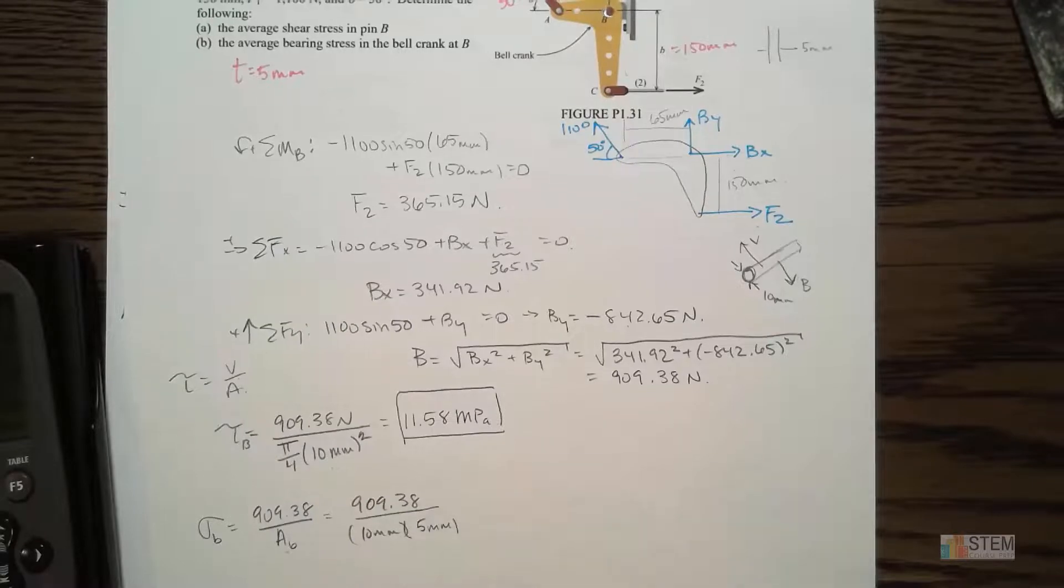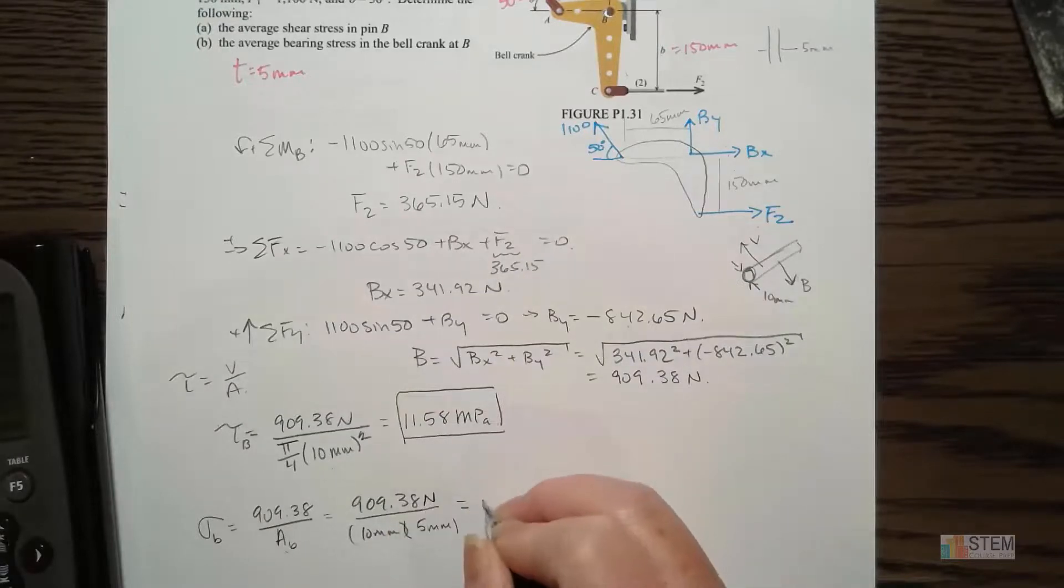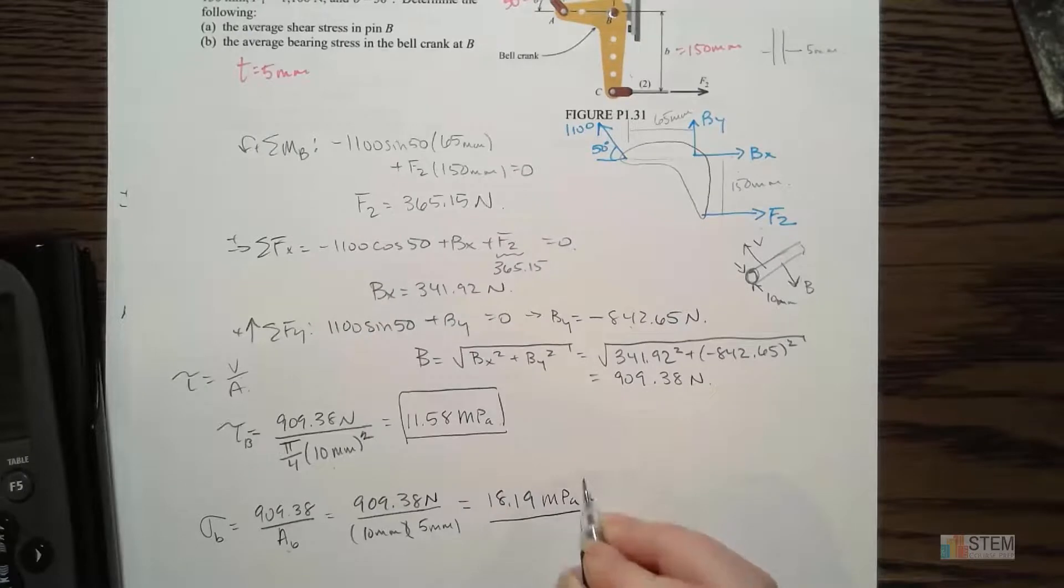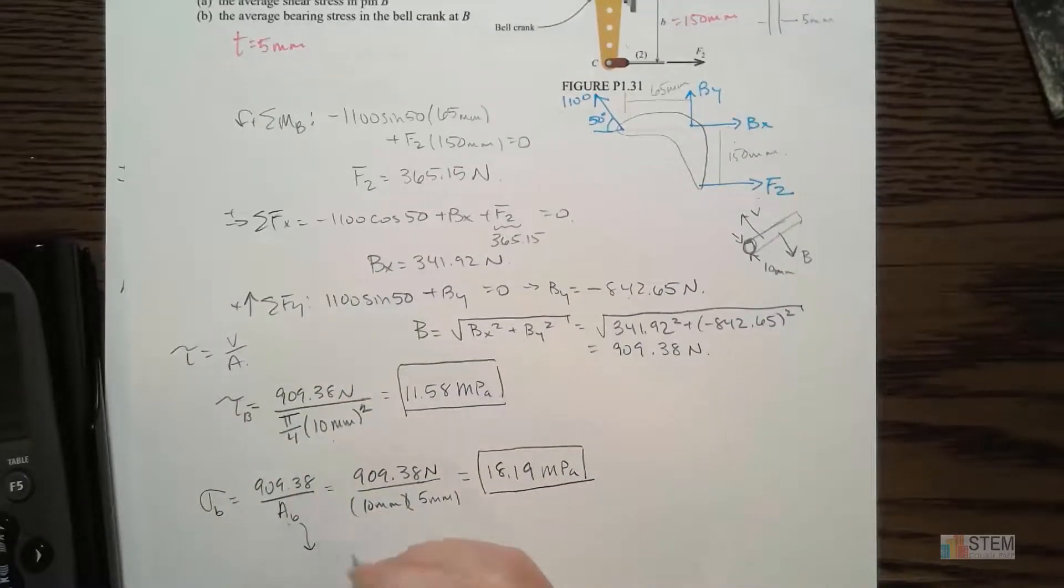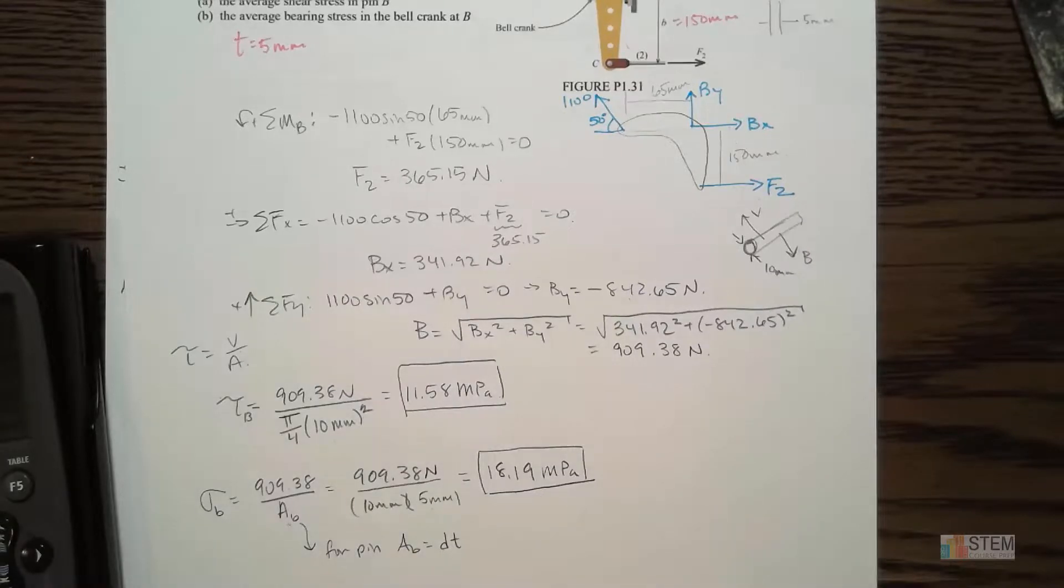So if we do that, we're going to have 909.38, diameter we were told is 10 millimeters, and then thickness is five millimeters. So let's calculate that. So that one is going to give me 18.18. And again, notice this is newtons per millimeter squared, so that's going to be in megapascal.